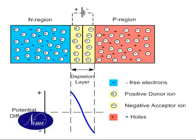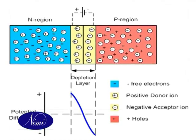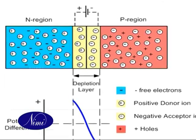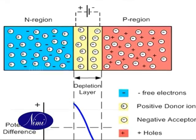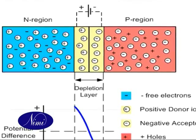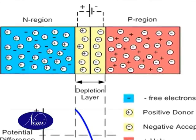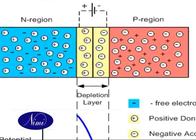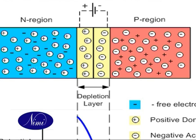The current in the forward direction increases rapidly upon reaching the forward voltage Vb, which is known as the barrier potential or the junction potential. The behavior of the P-N junction is limited by the maximum forward current, as too much current may destroy a diode due to excess heat generation.